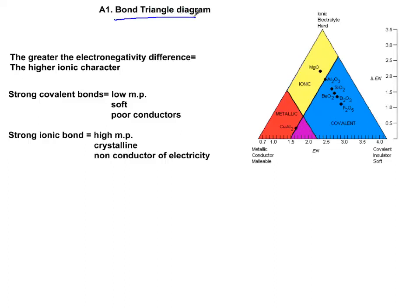I want to look into bond triangle diagram, which has a triangle of this shape. The x-axis is the average of electronegativity of two elements, and the y-axis is the absolute electronegativity difference.